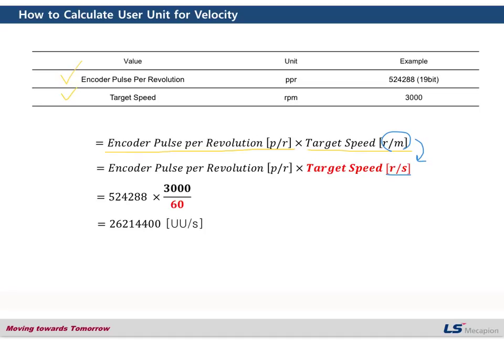Let's input the values. 52488, which is the encoder pulses per revolution, and 3000, which is the target speed. But we have to change the unit — minute should be converted to second, so we need to divide 3000 by 60. So we can get this value, and the unit is user units per second. That means the velocity for the L7NH drive — the output for the input.